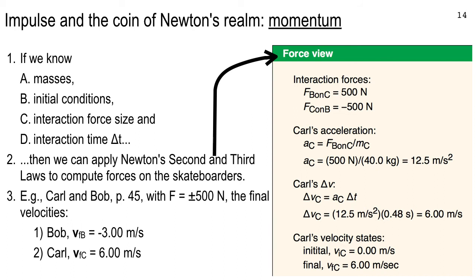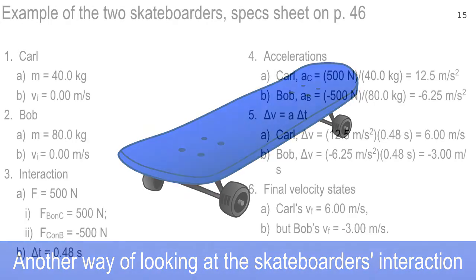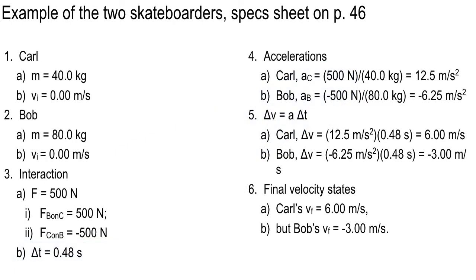But if you read the right side of that spec sheet on page 46, you'll see there's a different way to look at it — the concept of momentum and impulse. Momentum and impulse are a different but equivalent way to using F equals MA. So here are the basic specs from page 46. We can use F equals MA to work out everything and get the final velocity states for Carl and Bob.